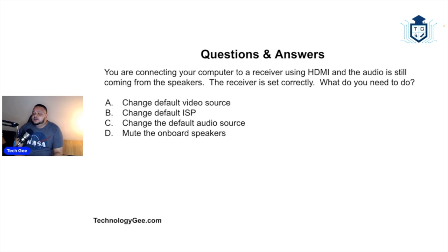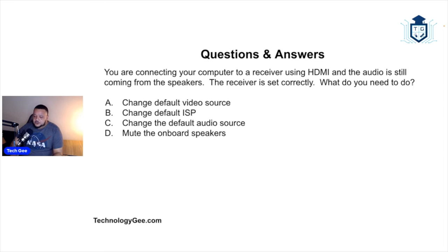Next question: you are connecting your computer to a receiver using HDMI and the audio is still coming from the laptop speakers. The receiver is set correctly. What do you need to do? Would you change the default video source, change the default ISP, change the default audio source, or mute the onboard speakers? The answer is: change the default audio source.